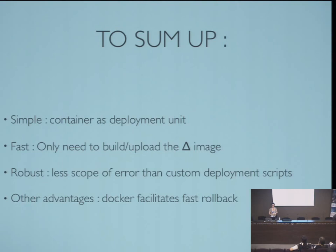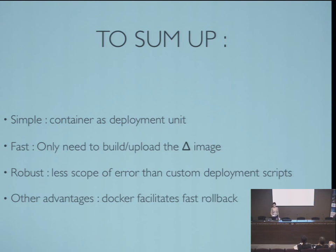To sum up why we are using Docker for continuous delivery: first, because it's simple — we use the container as the deployment unit instead of manipulating artifacts or deployment scripts. It's fast because we share resources and the kernel, and when building an image we only upload the delta — the difference from the previous image. It's robust because we have less error-prone code than scripts or manual manipulations. And in few commands we can roll back what we've done.